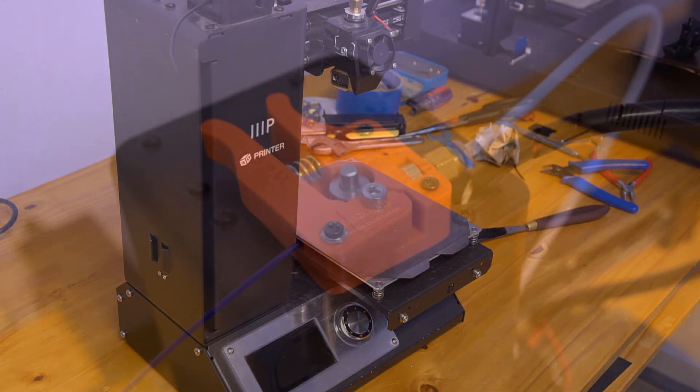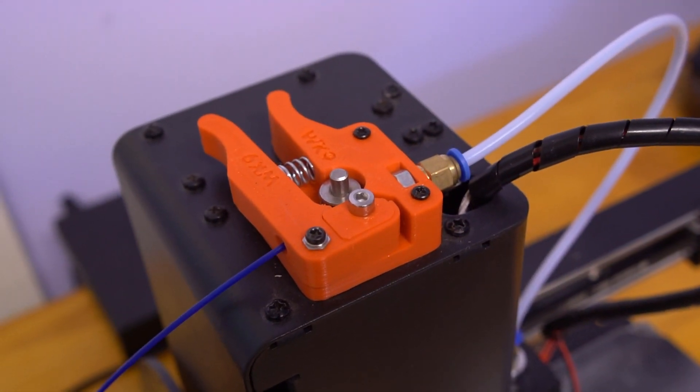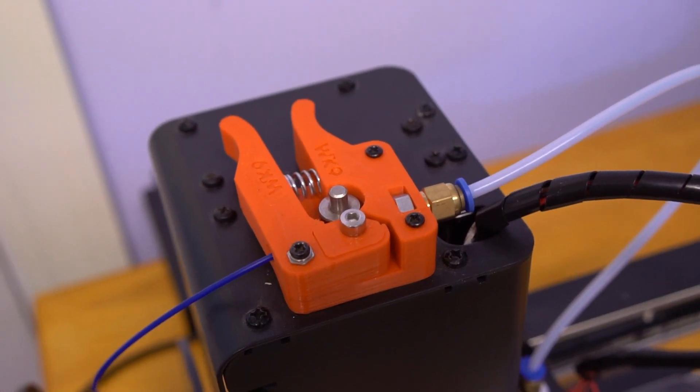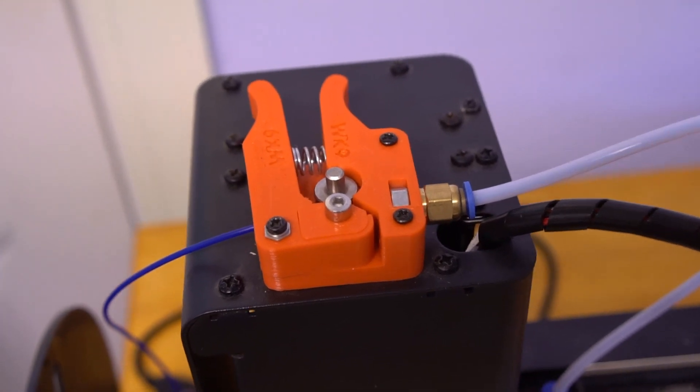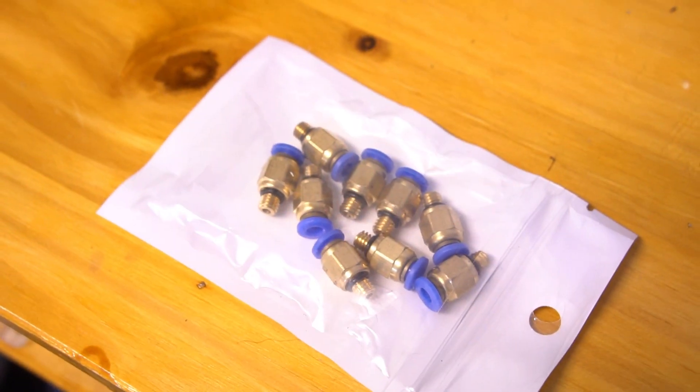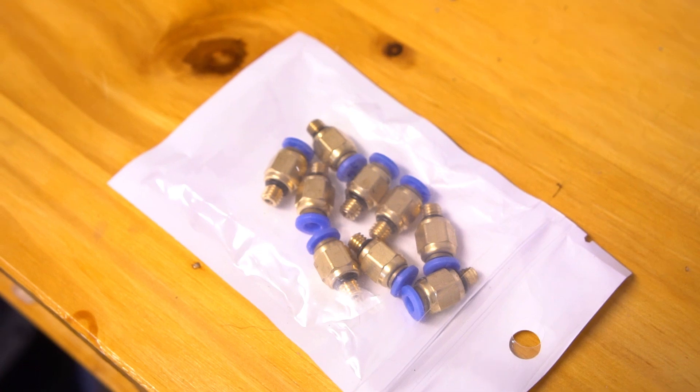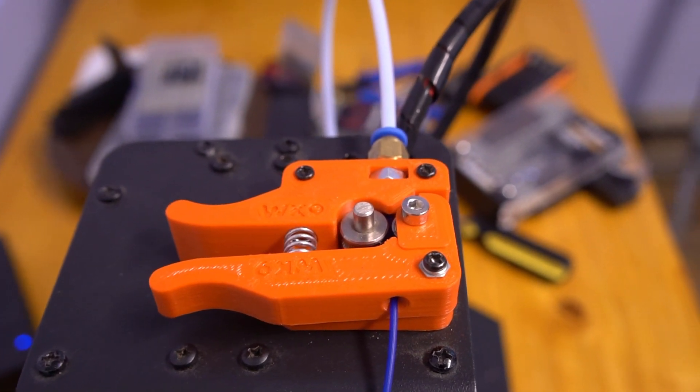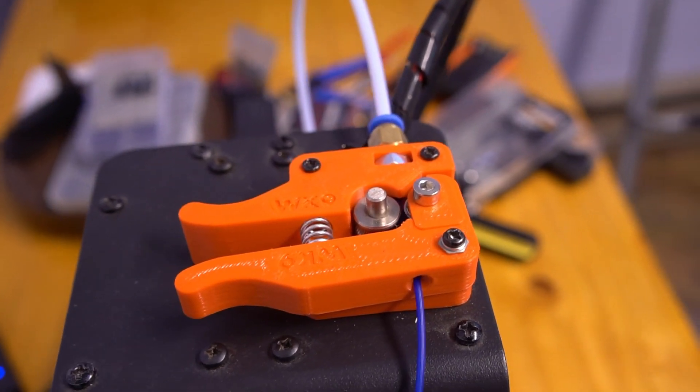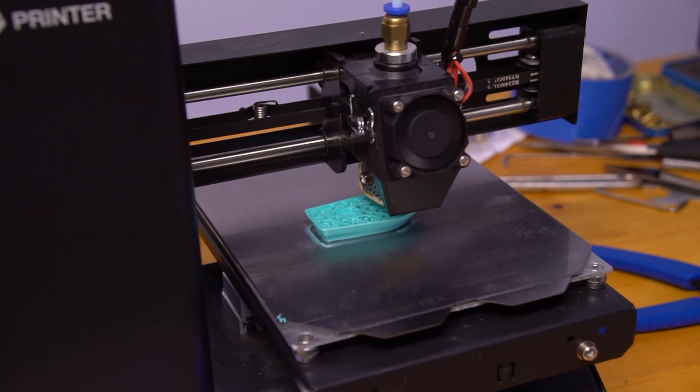The other well-known failure point on these machines is the Bowden connector in the extruder. The one that comes stock in the printer eventually breaks. To remedy that, I simply printed myself this excellent upgrade designed by Wiley Kyodo. Great name. It uses much more robust M6 Bowden connectors, and it also has a number of other small design improvements that make it a much nicer part to work with. I especially like the longer, stronger lever arms. And with the extruder working again, the machine is ready to print.